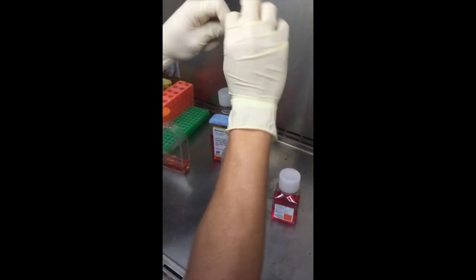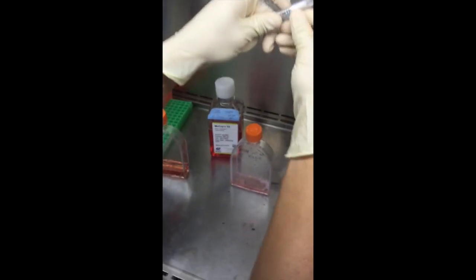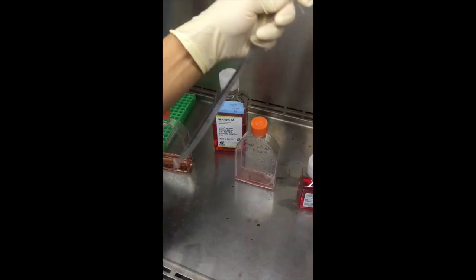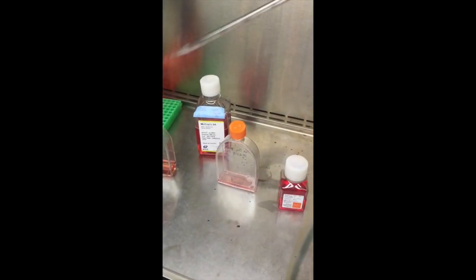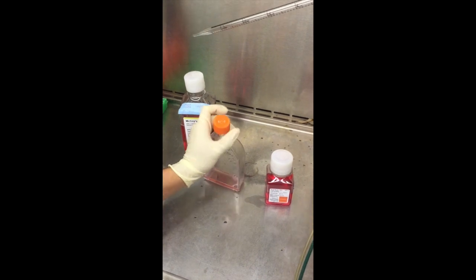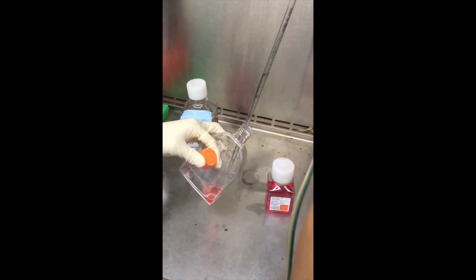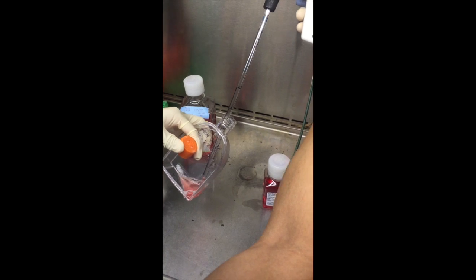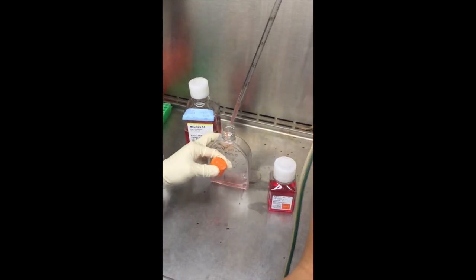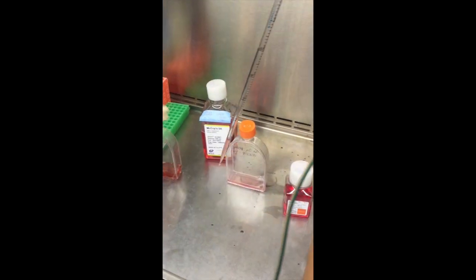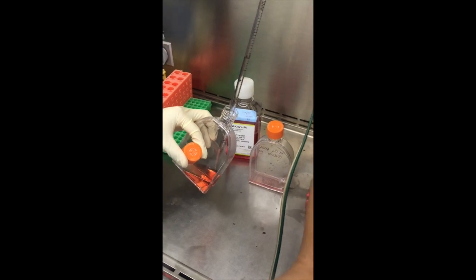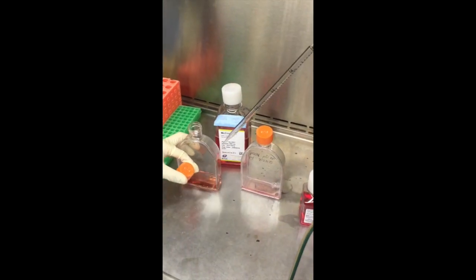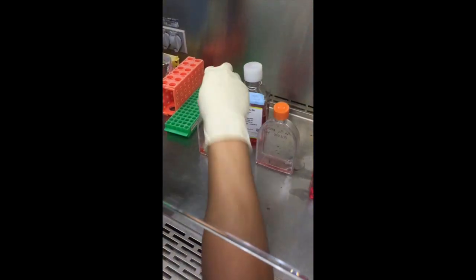Five mil pipette. Just one mil of the cells. So I have an eighth of the cells from the original flask. And you want to try and put the tip into the media so you're not dropping it too far. There we go.